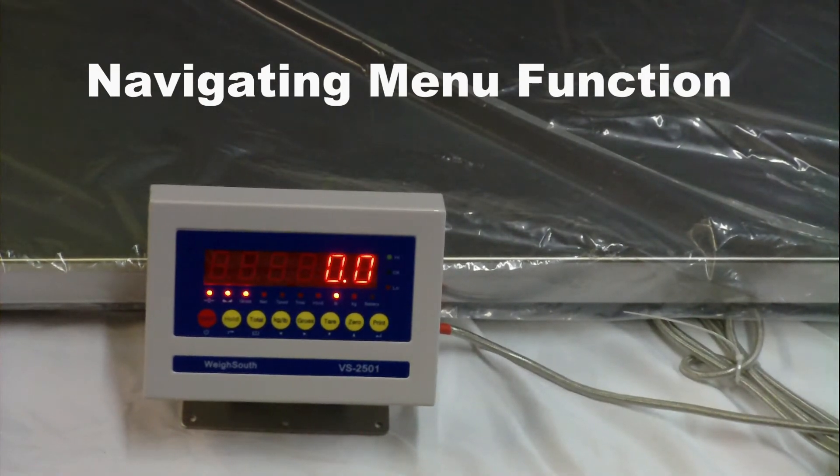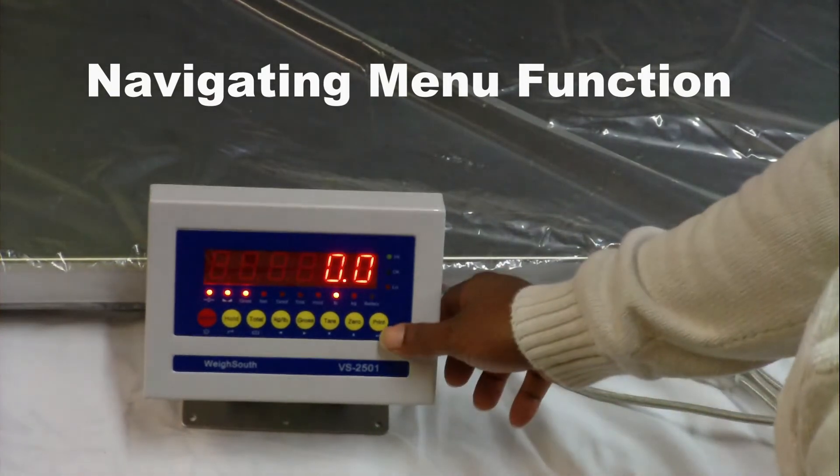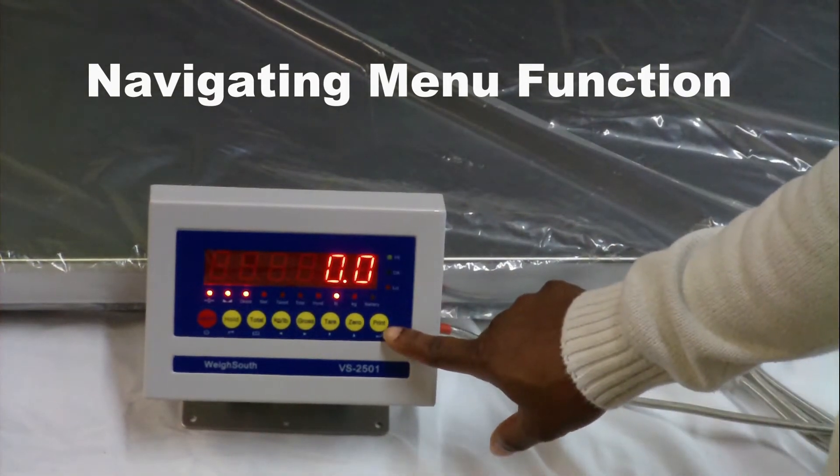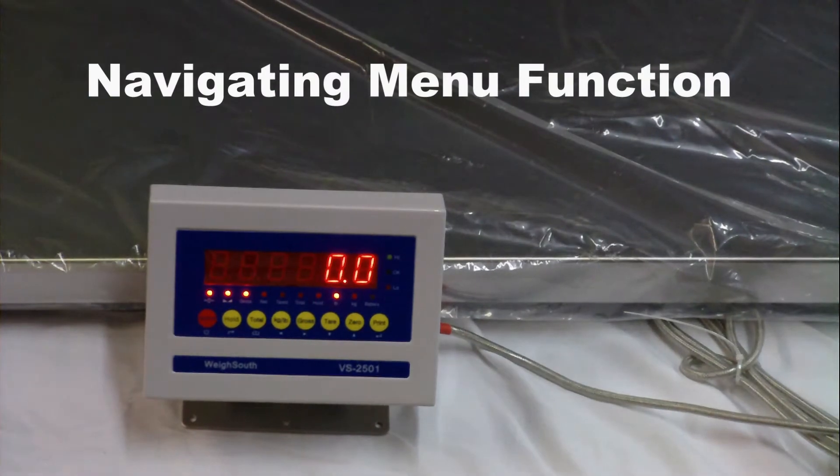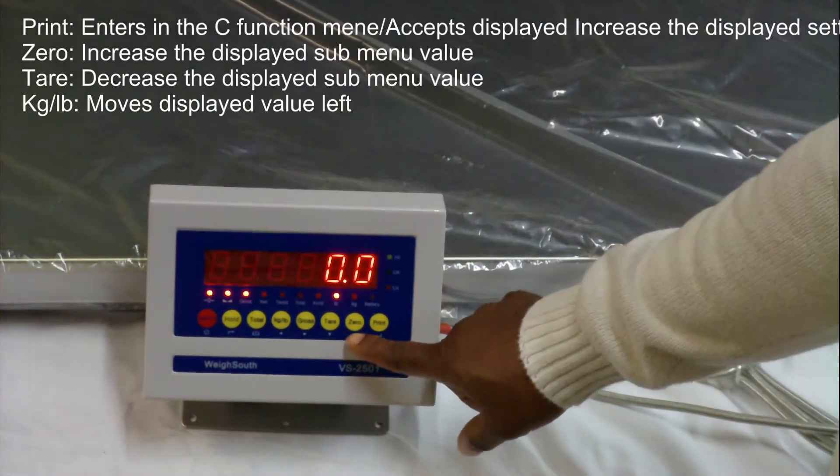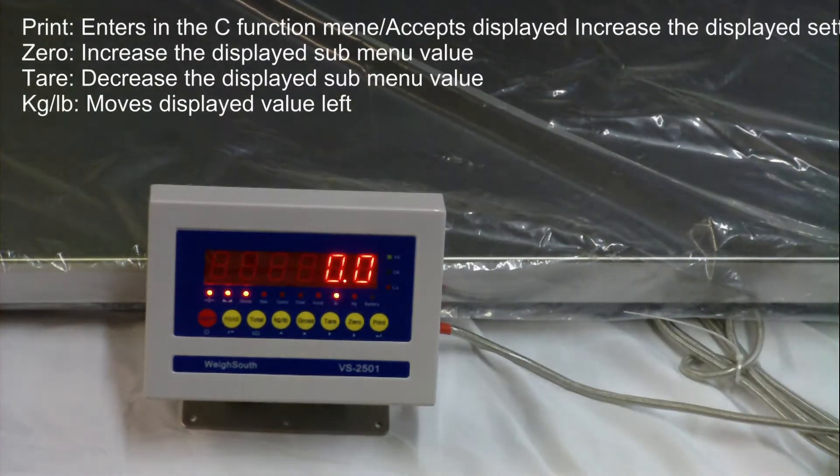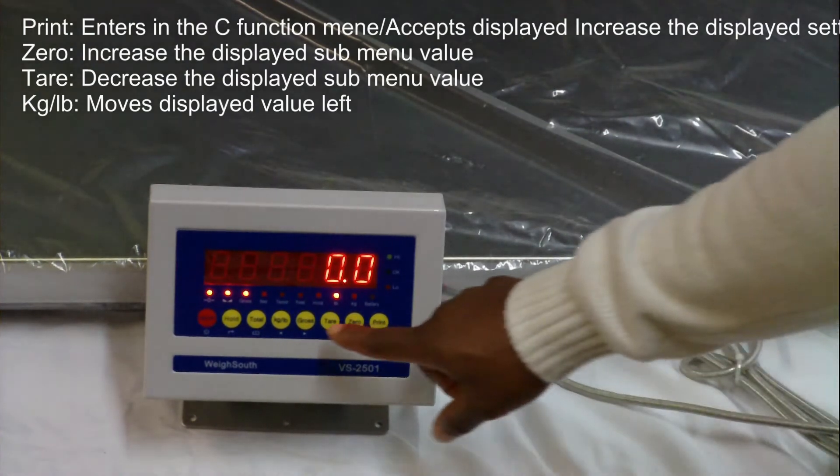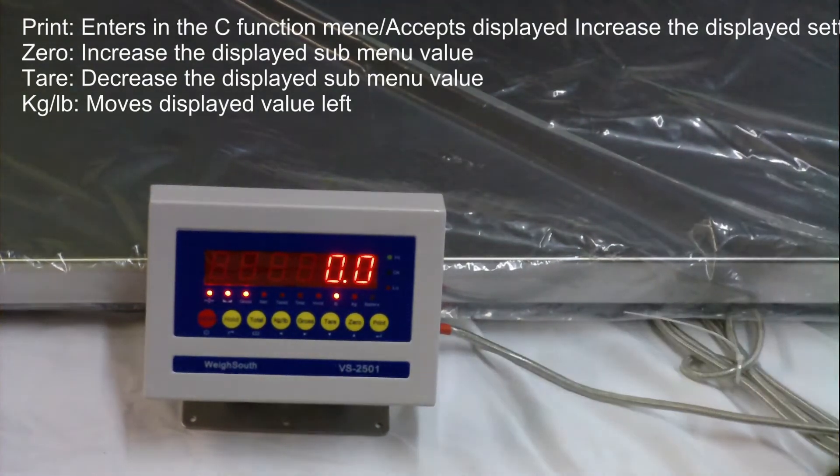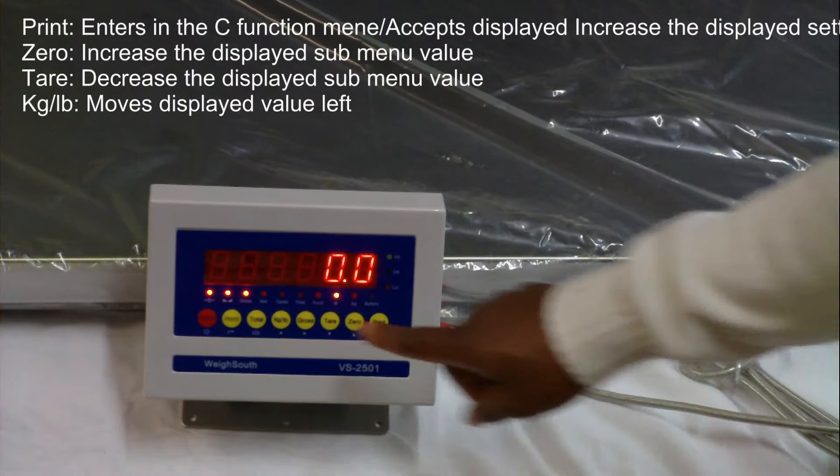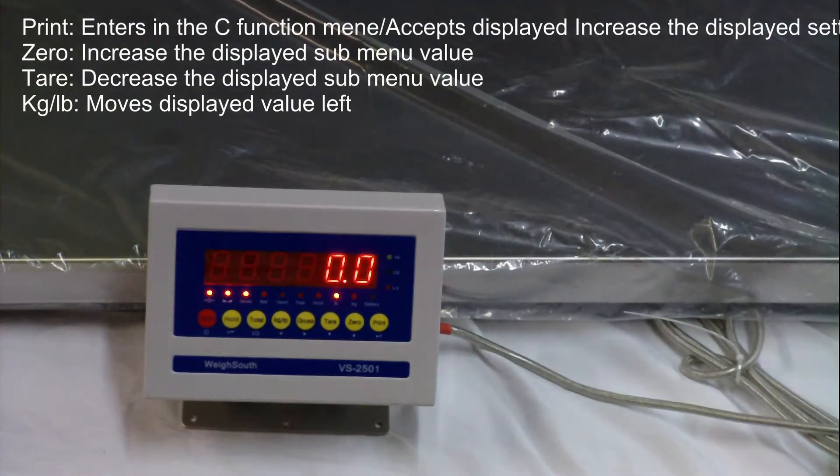The keys are labeled and the function is below. Print enters the C function menu and accepts the displayed setting. Zero increases the displayed submenu value. Tear decreases the displayed submenu value, and kg pound moves the displayed submenu value left.